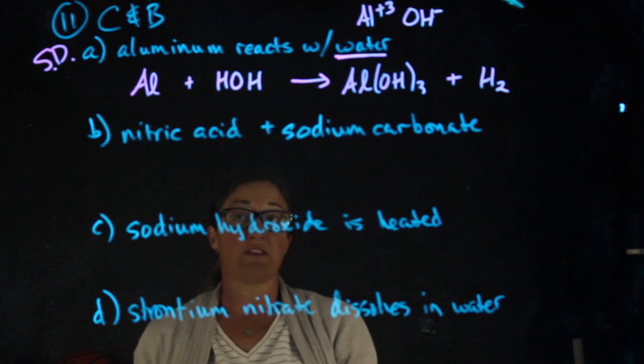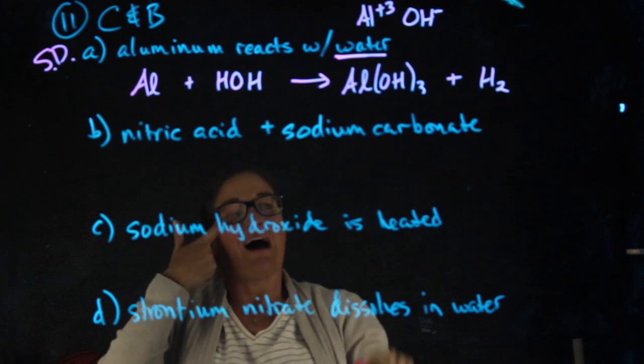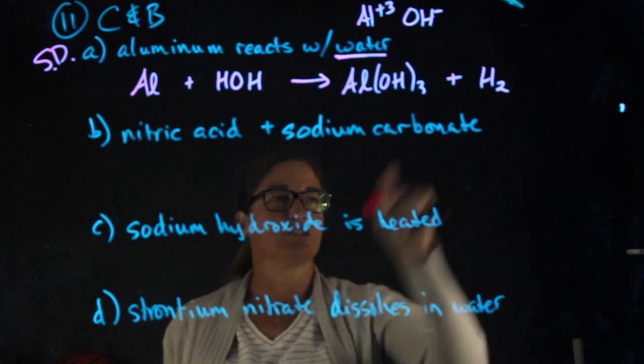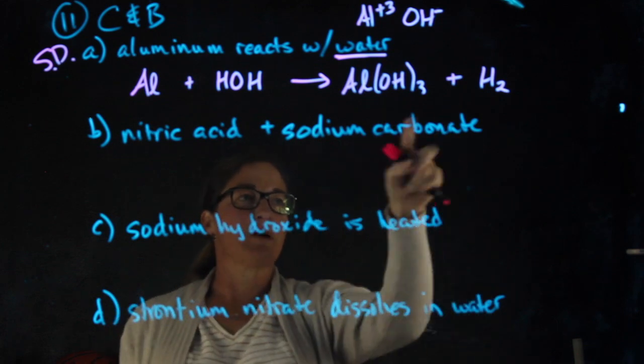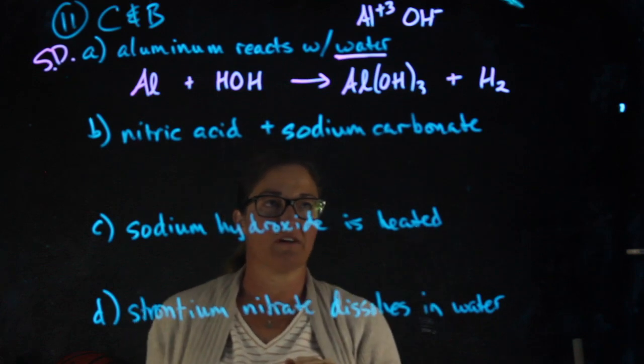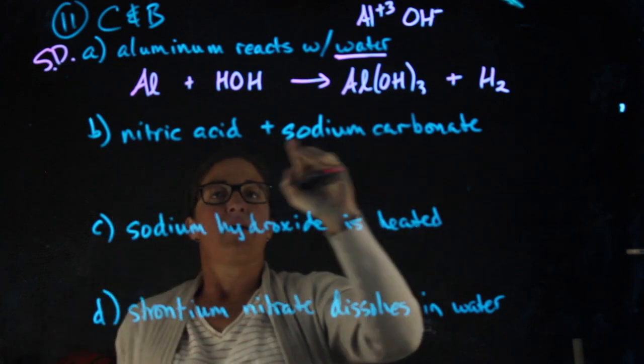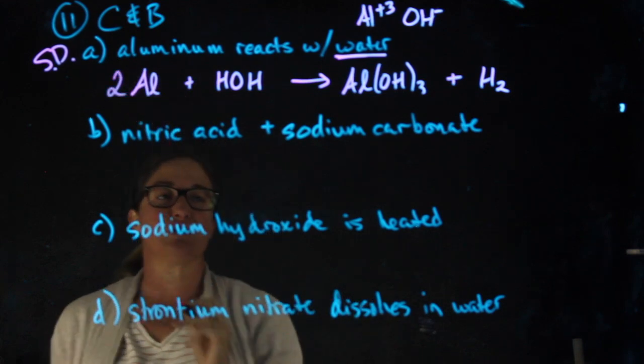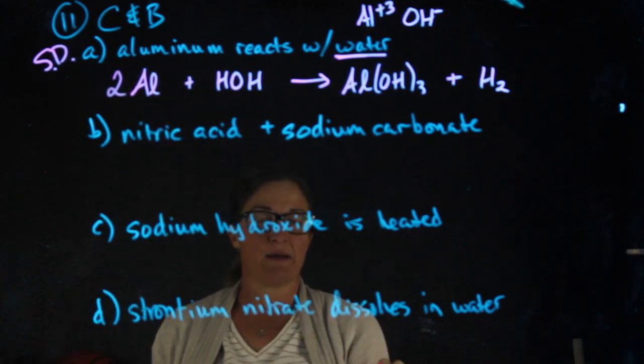This reaction is one of the trickier ones to balance. I have three hydroxides and two hydrogens. I'm going to run myself into a circle where I have an odd number and an even number here. When I have difficulty balancing a reaction like this, I put a two in front of the first thing and then I proceed.